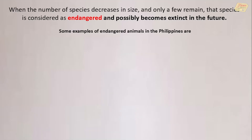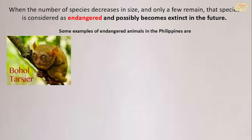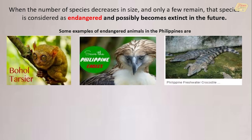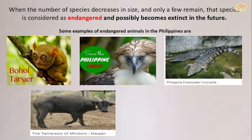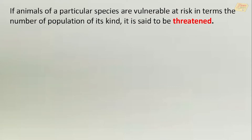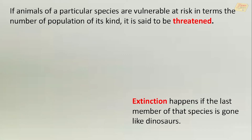When the number of species decreases in size and only a few remain, that species is considered as endangered and possibly becomes extinct in the future. Some examples of endangered animals in the Philippines are shown here. If animals of a particular species are vulnerable at risk in terms of the number of population of its kind, it is said to be threatened. Extinction happens if the last member of that species is gone, like dinosaurs.